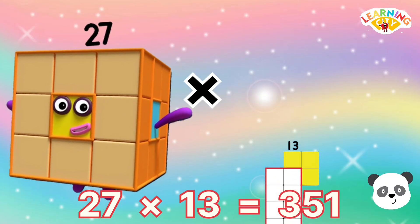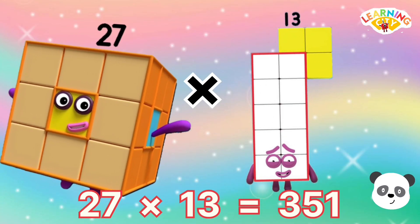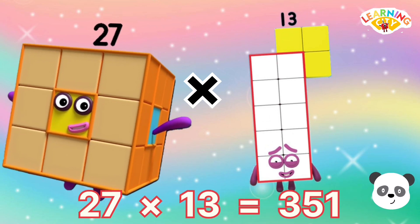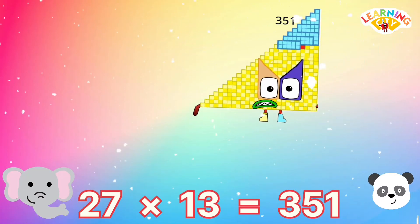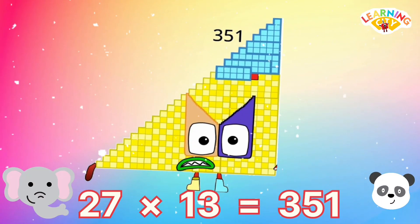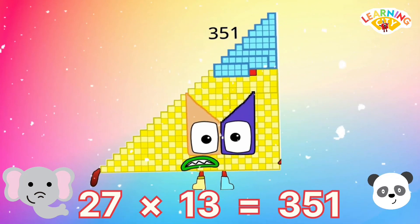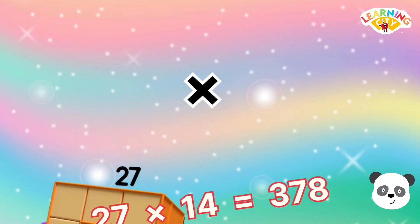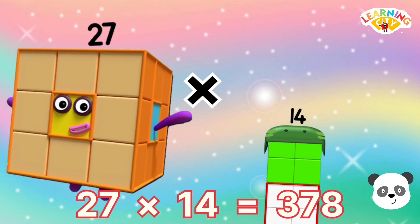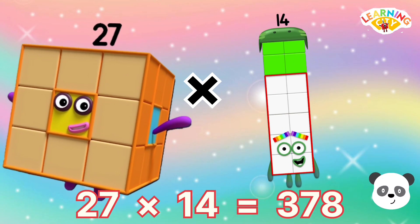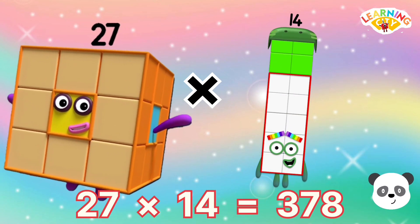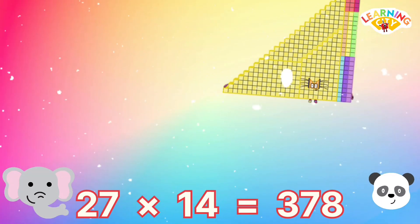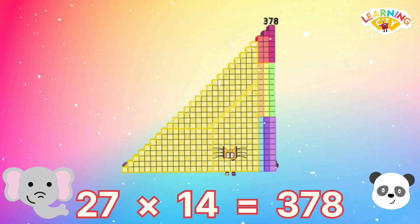27 multiply 13 equals 351. 27 multiply 14 equals 378.